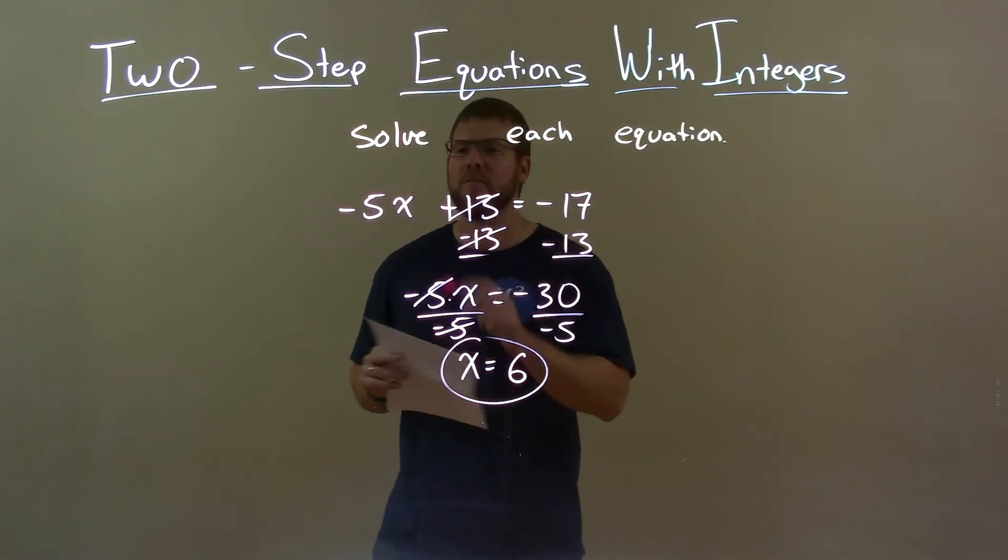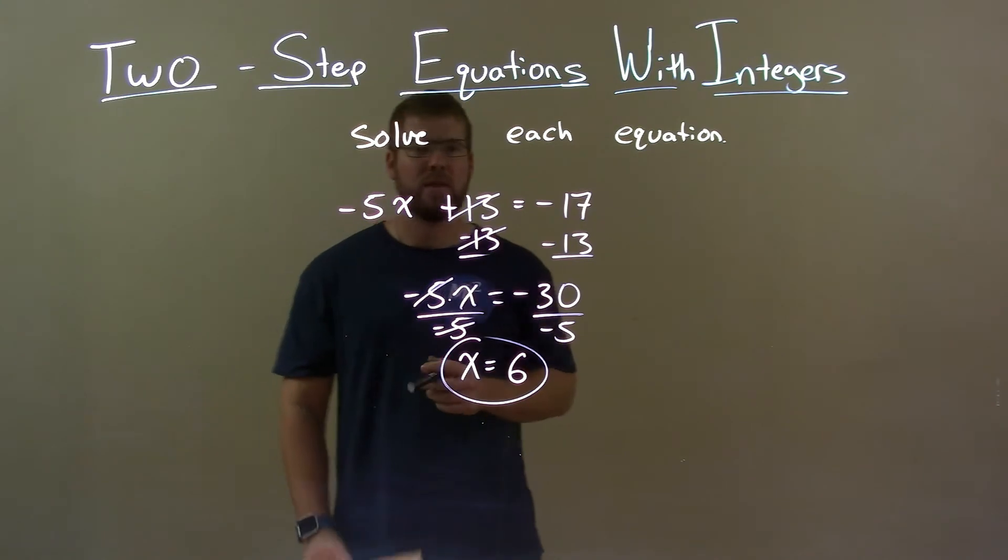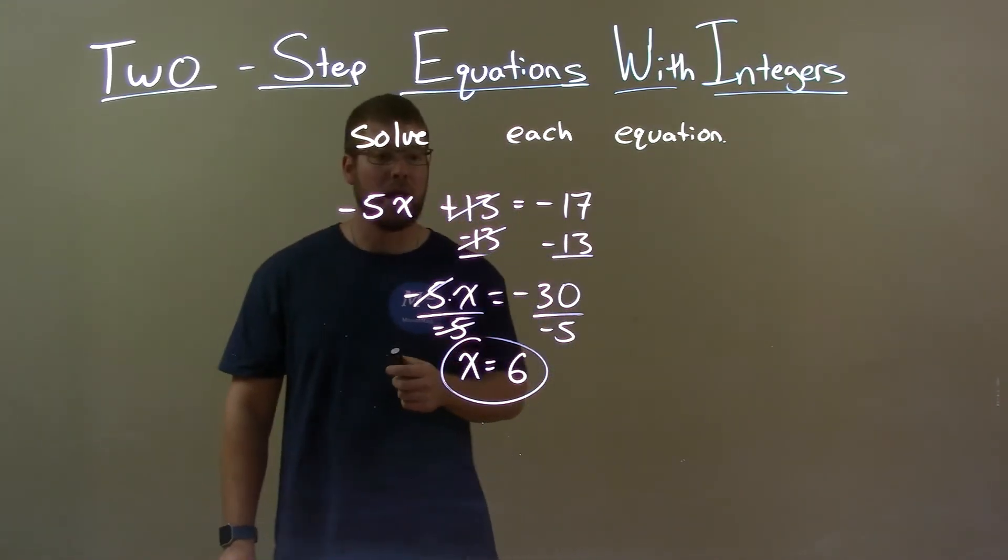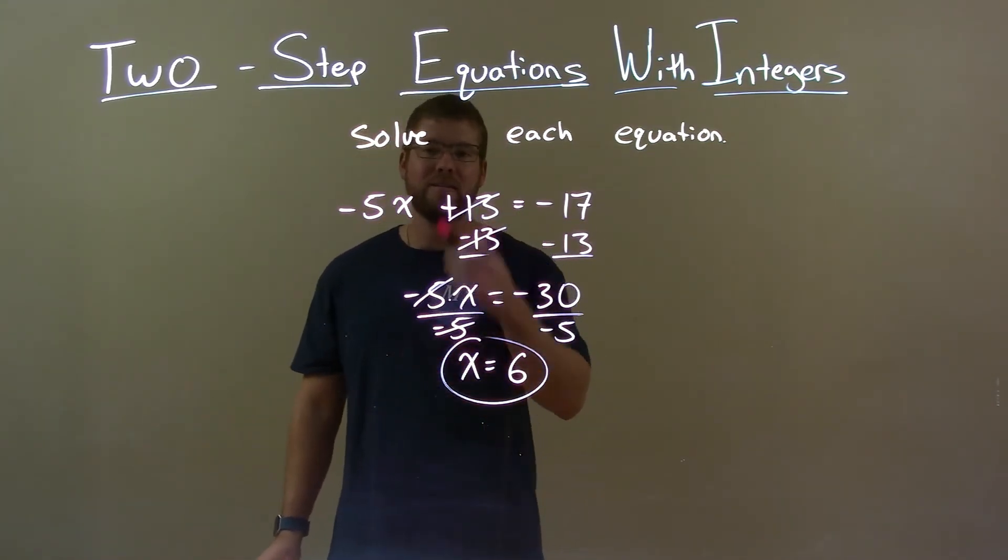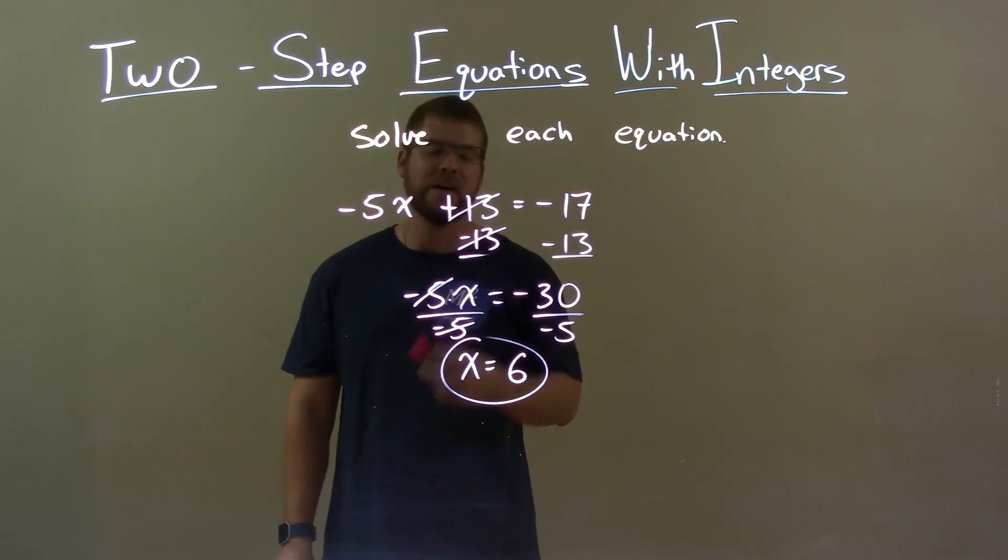Quick recap, we're given negative 5x plus 13 equals negative 17, and we want to solve for x. So I subtract 13 from both sides, then I divide both sides by negative 5. That gave me my final answer of x equals 6.